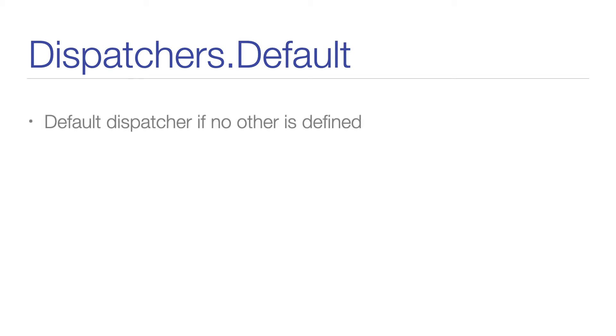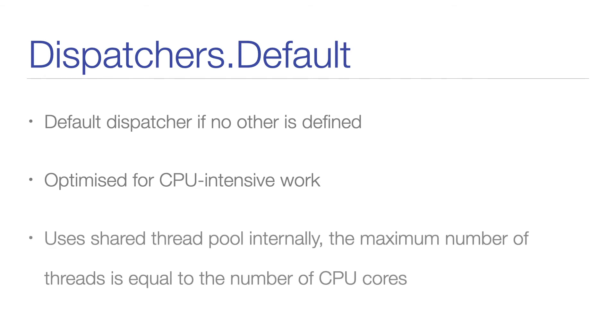The next dispatcher is the default dispatcher. This one is used by all the standard coroutine builders, like launch and async, if no other dispatcher is specified in the context. This dispatcher is optimized to perform CPU-intensive work outside of the main thread. Examples for CPU-intensive operations are heavy calculations, sorting of a big list, or parsing a big JSON file. This dispatcher implementation is also backed by a shared pool of threads, but here the maximum number of threads is equal to the number of CPU cores on the device, but at least two.